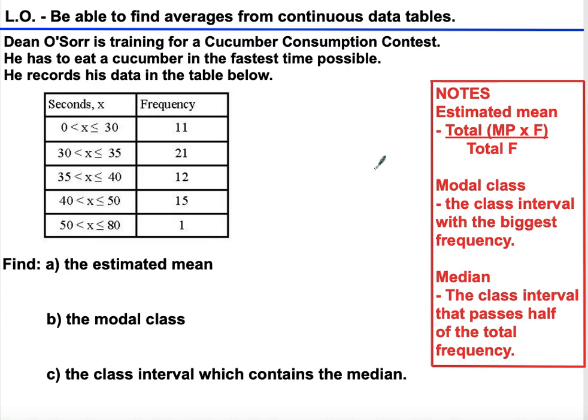Hello, be able to find averages from continuous data tables. Dean O'Sorr is training for a cucumber consumption contest. He has to eat a cucumber in the fastest time possible and he records his data in the table below.